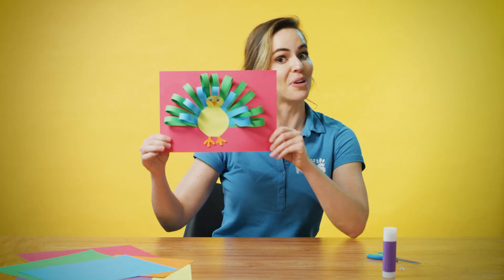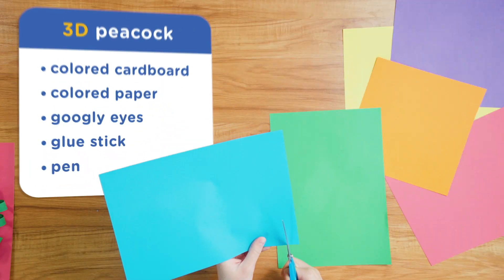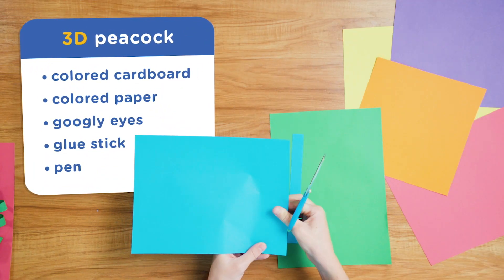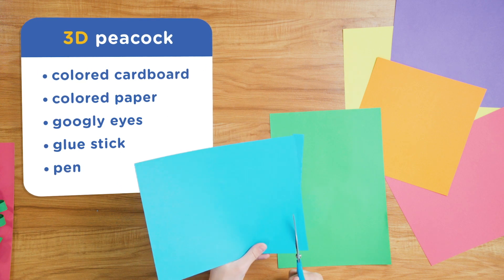Today we're going to make a 3D peacock. The first step is to cut the strips which are going to be our peacock feathers. Now I'm going to use blue and green.